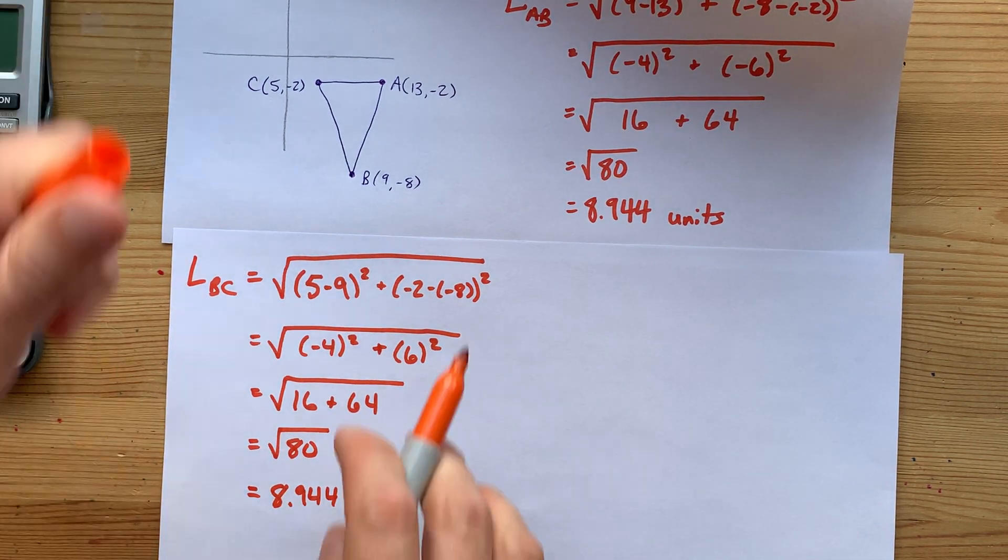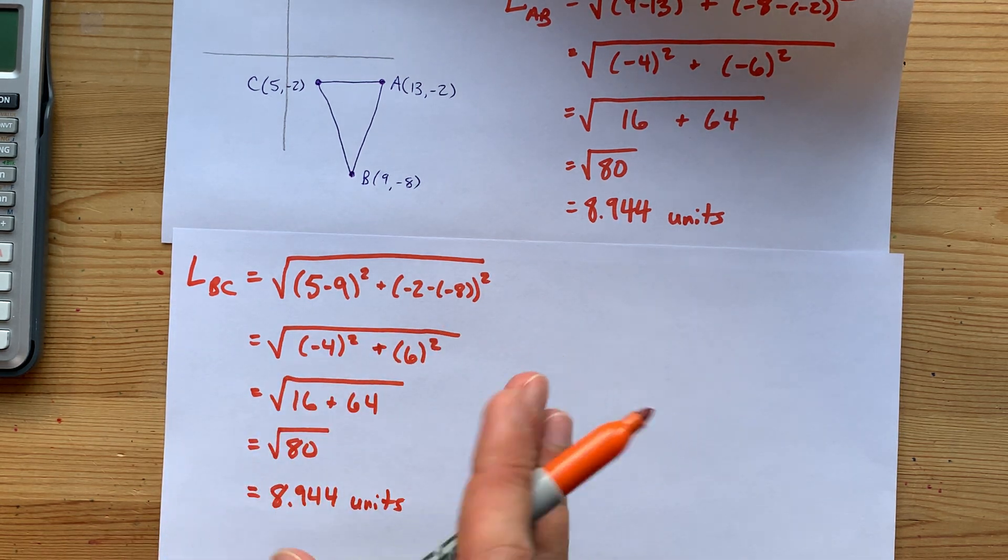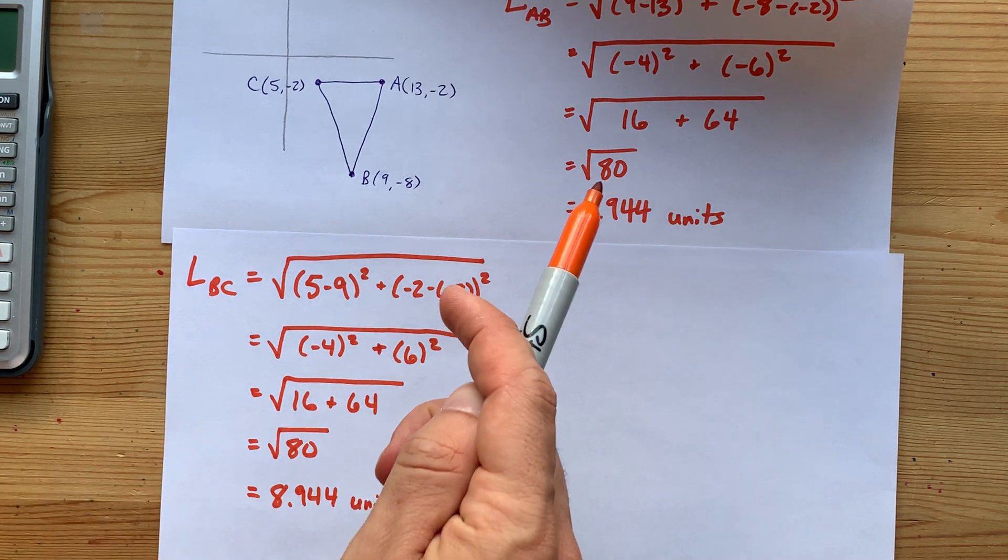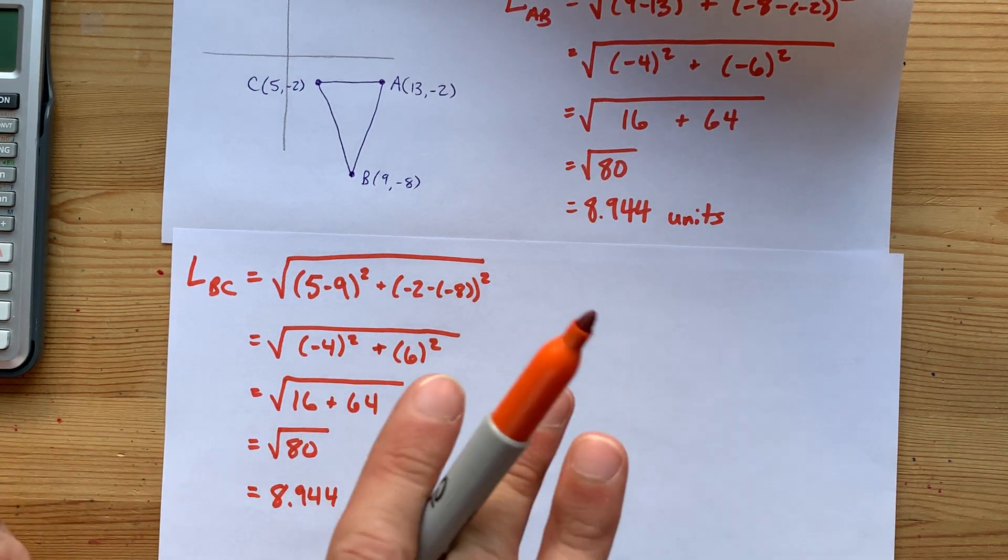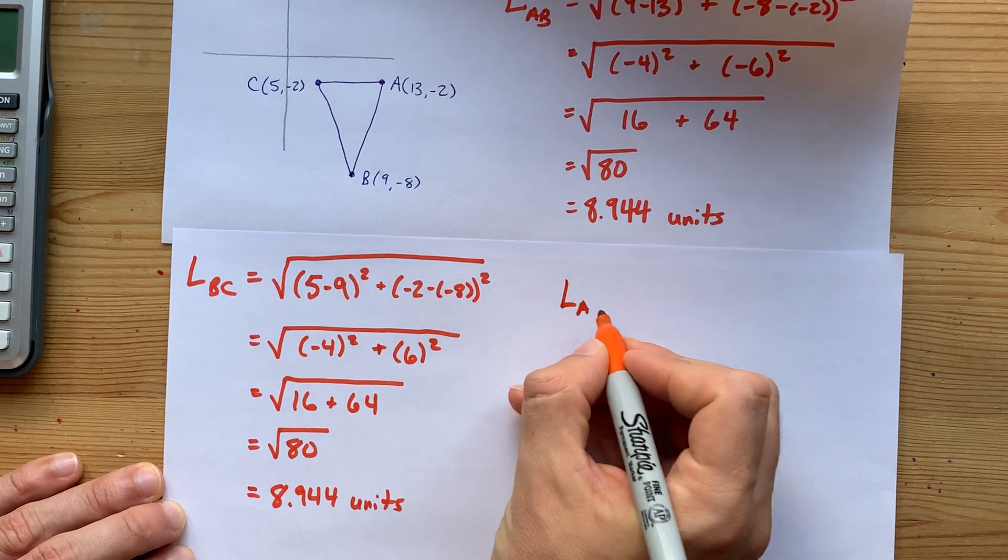Cool. Now, I already noticed that AB and BC are the same length, so we're at least isosceles. But we have to check the third side. If the third side is the same length, it's actually equilateral, not isosceles. So let's do it. The length of AC.